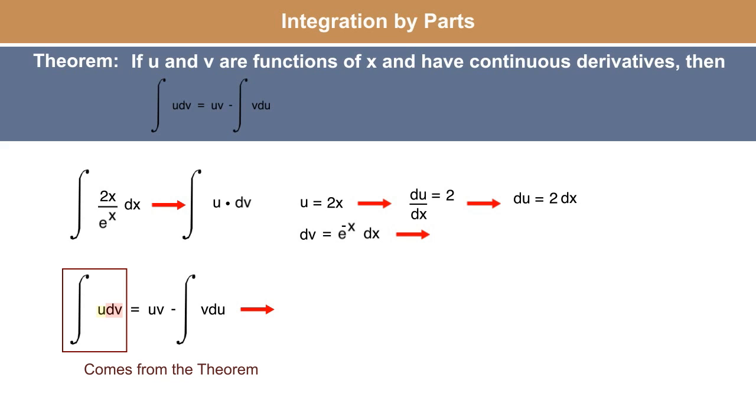And dv, well you just integrate that. Since dv is e to the negative x dx, the integral of that turns out to be negative e to the negative x. This is pretty easily verified, this is just a basic u substitution, probably something you guys are familiar with.